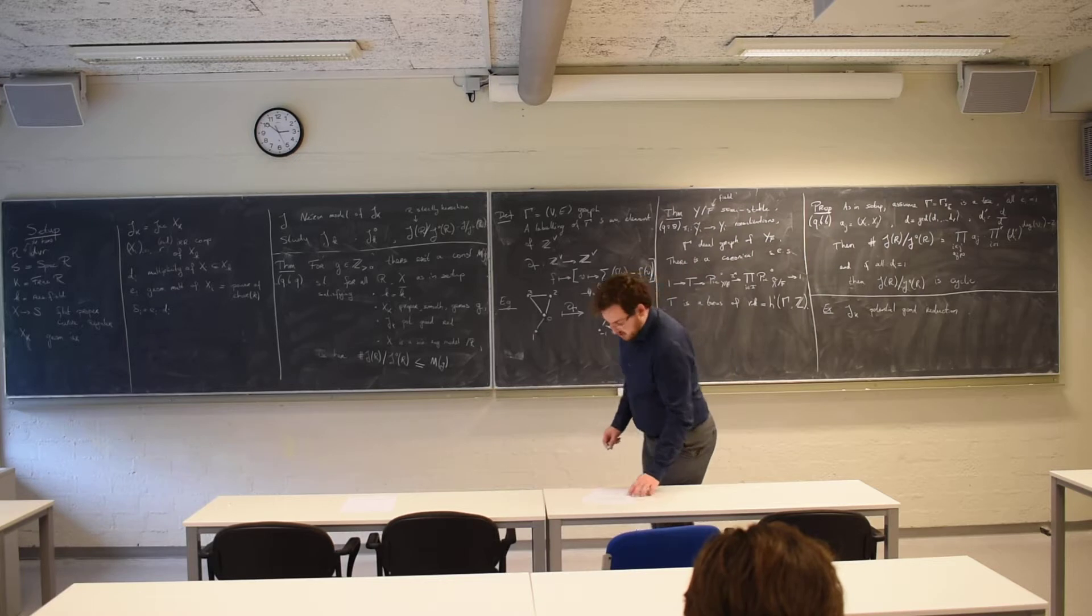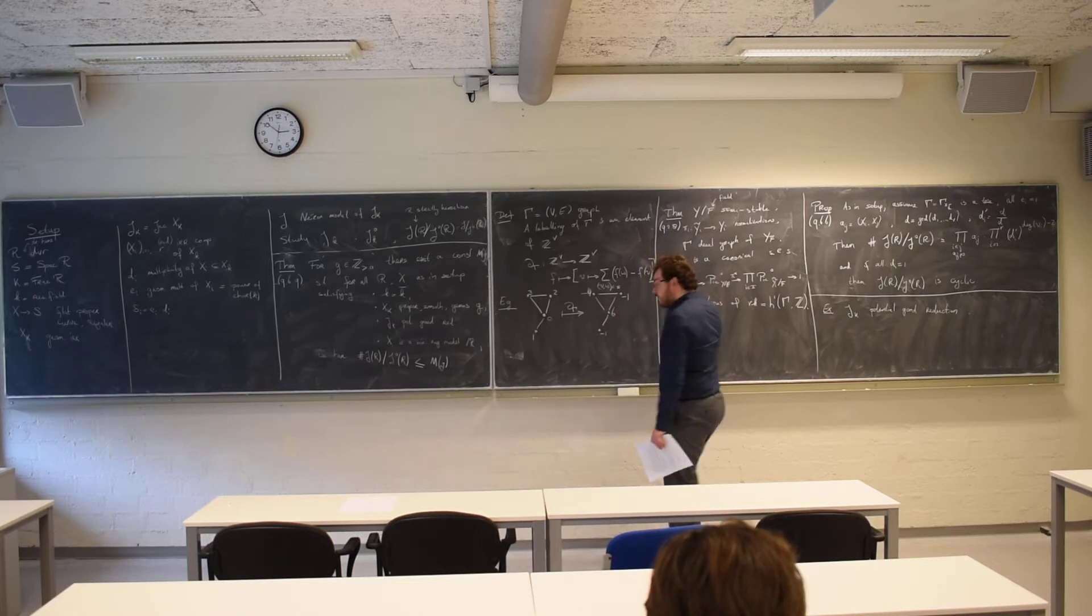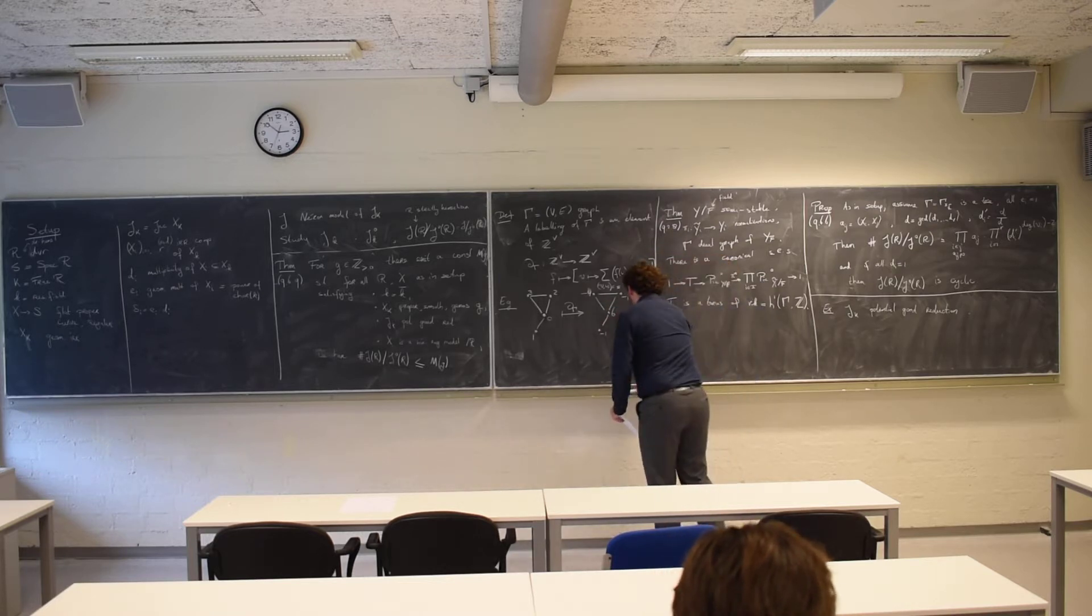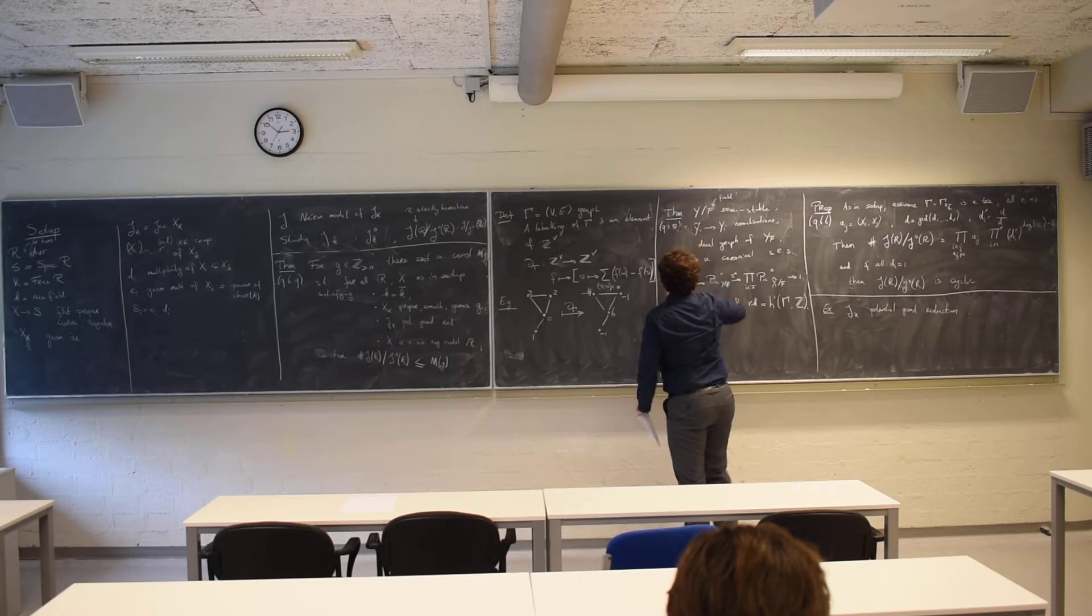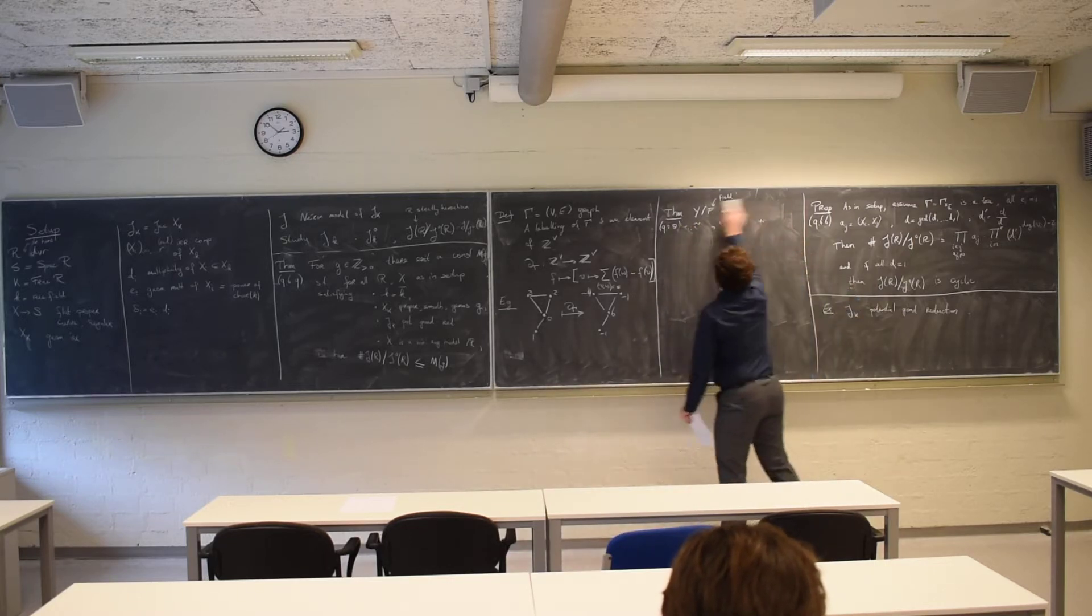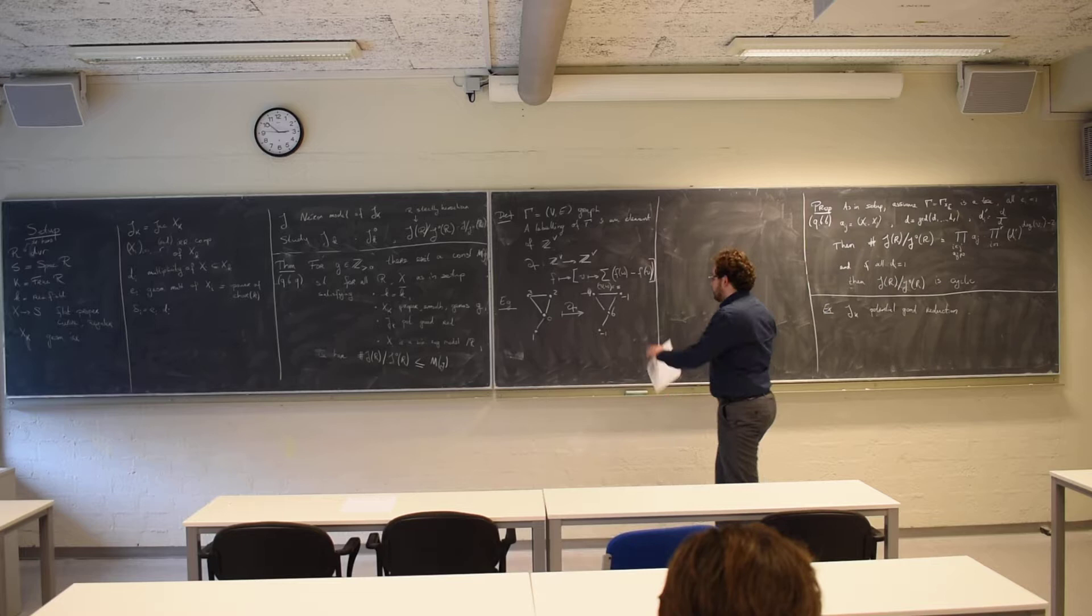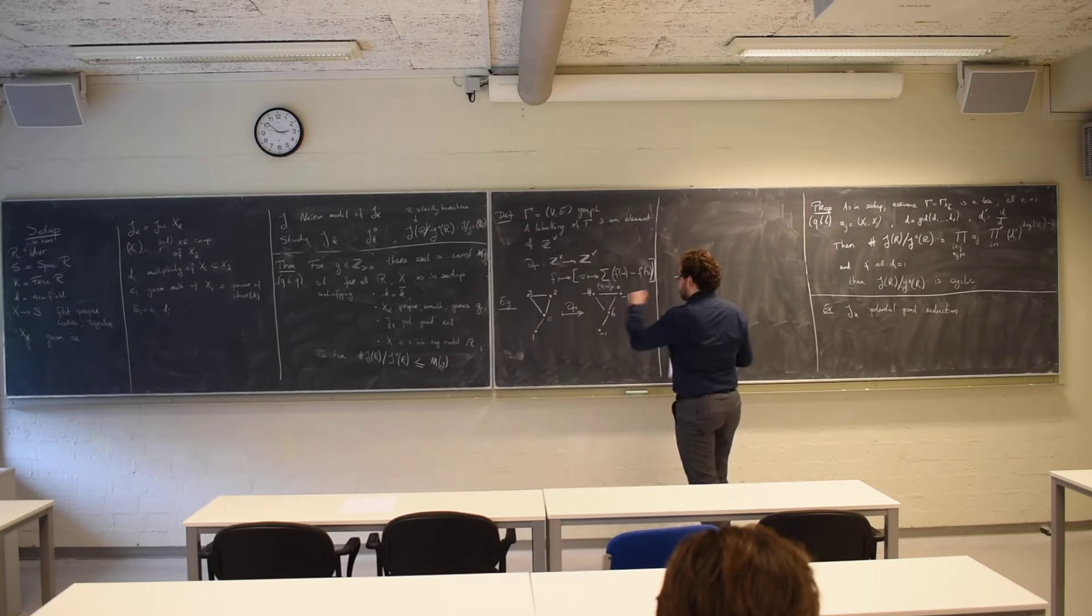And now what you notice in the example is that if you sum up these numbers, you get zero. And also if you look at the formula, you'll see that that should be the case because it's all just in terms of the degrees of all these vertices.